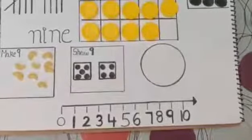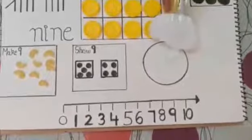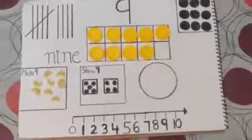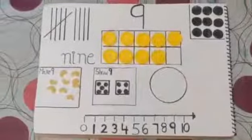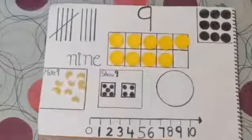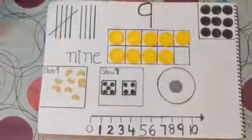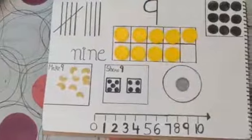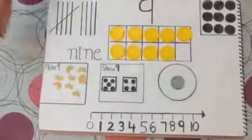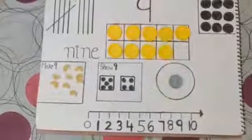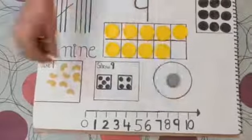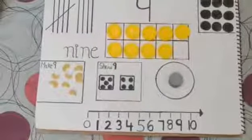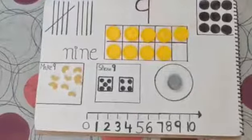So let's stack nine coins in the circle. So children, I am going to put the coins above each other. Let's count it together now. One, two, three, four, five, six, seven, eight, nine.